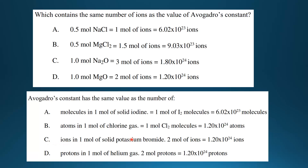Checking the other options: for B, chlorine gas is diatomic, so 1 mole of chlorine gas consists of 2 moles of chlorine atoms, giving 1.20 x 10²⁴ atoms. For C, potassium bromide is made up of K⁺ and Br⁻ ions — 2 ions per formula unit — so 1 mole gives 2 moles of ions, equaling 1.20 x 10²⁴ ions. For D, helium has atomic number 2, so each atom has 2 protons, giving 2 moles of protons and 1.20 x 10²⁴ protons.